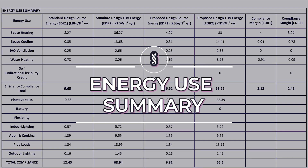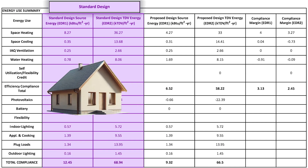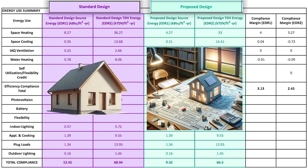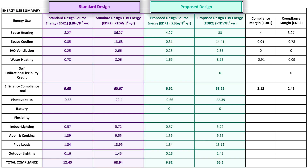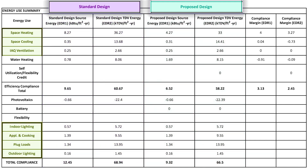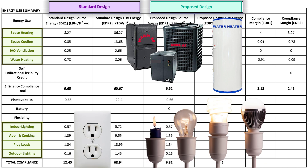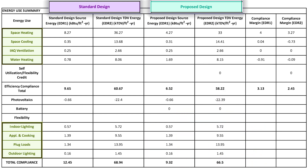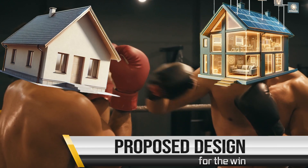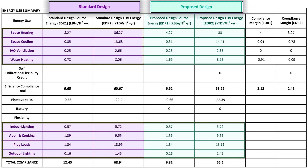This next table is a detailed breakdown of the previous table's comparison between the standard design and your proposed design. Specifically, it provides a breakdown of your home's projected energy consumption for different features of your home, such as heating, cooling, water heating, and lighting. The table then compares how your proposed design performs in each category against the basic standard design.